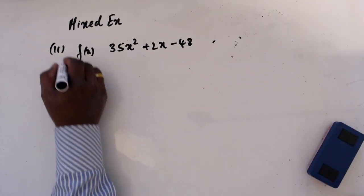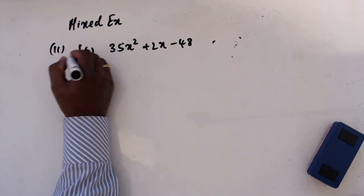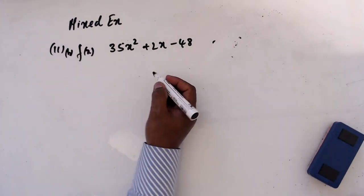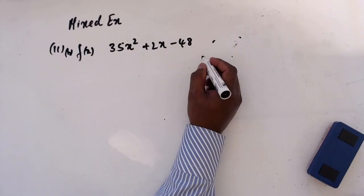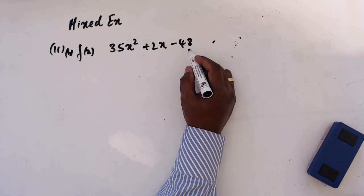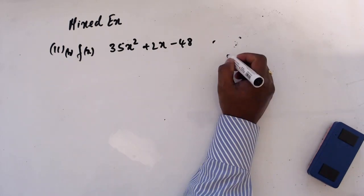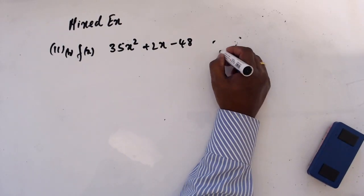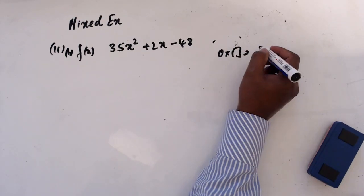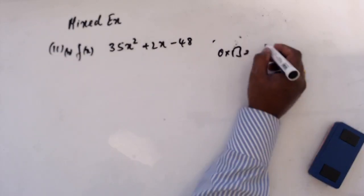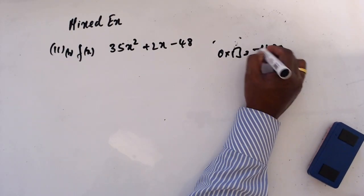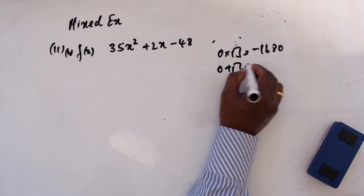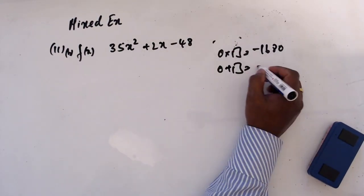In part b we have to factorize this expression. So 35 times 48 — when you multiply that gives 1680 — and when you add those two numbers together you want to get plus 2.